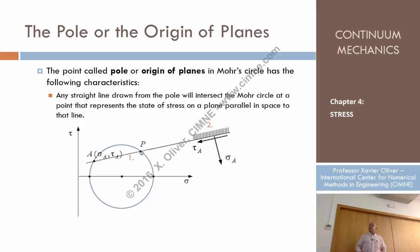If I trace from the pole, assuming that it exists - we'll see how to find it - if I just trace a parallel to the trace of this plane, I obtain an intersection with another point of the Mohr circle.